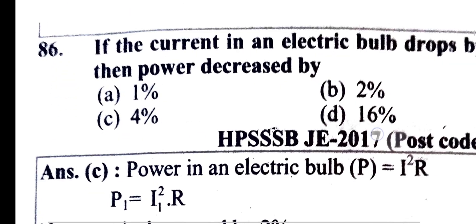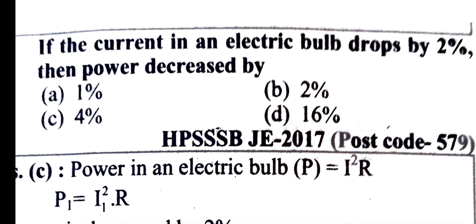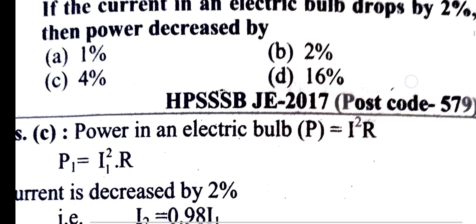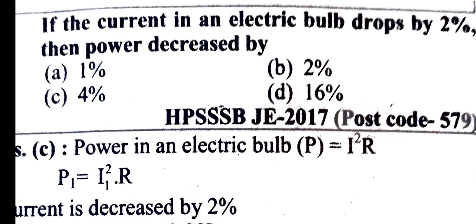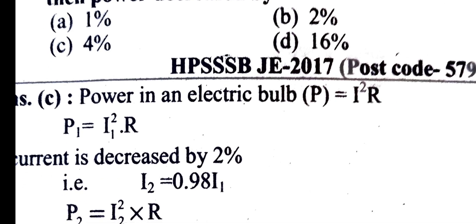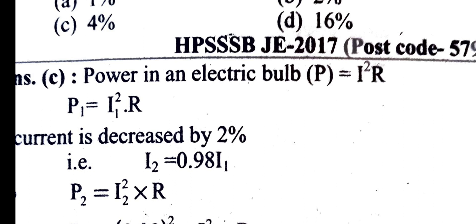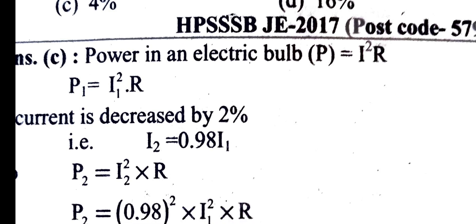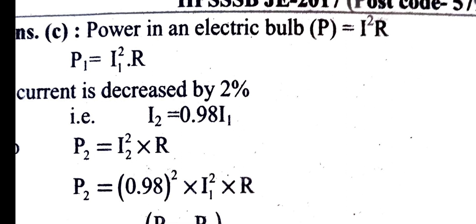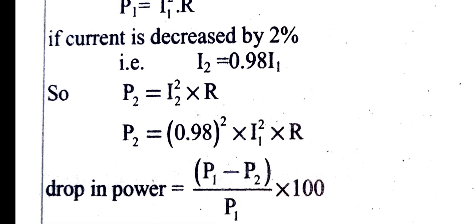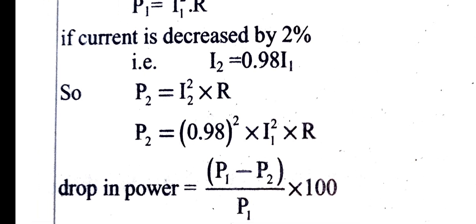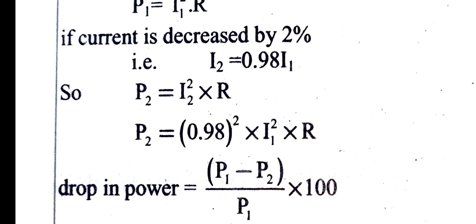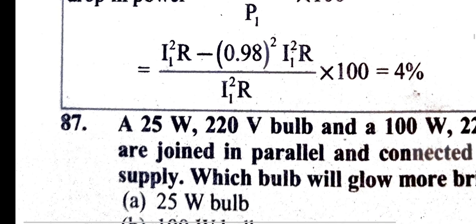If the current in an electric bulb drops by 2%, by what percentage does the power decrease? Since power equals I²R, if current decreases by 2%, the new current is 0.98I. The new power is (0.98)² times R, which equals approximately 0.9604 of original power. Therefore the power drops by approximately 4%.